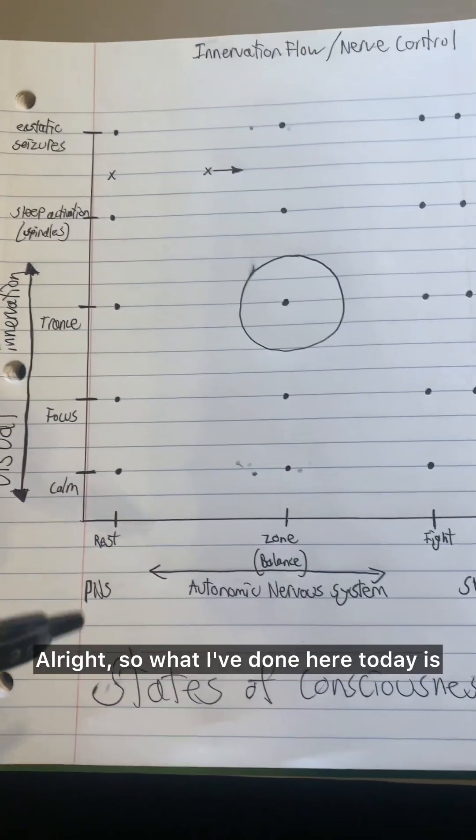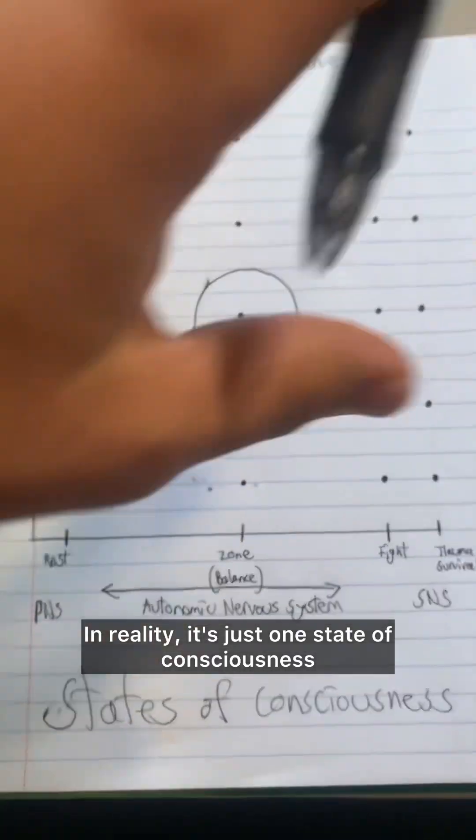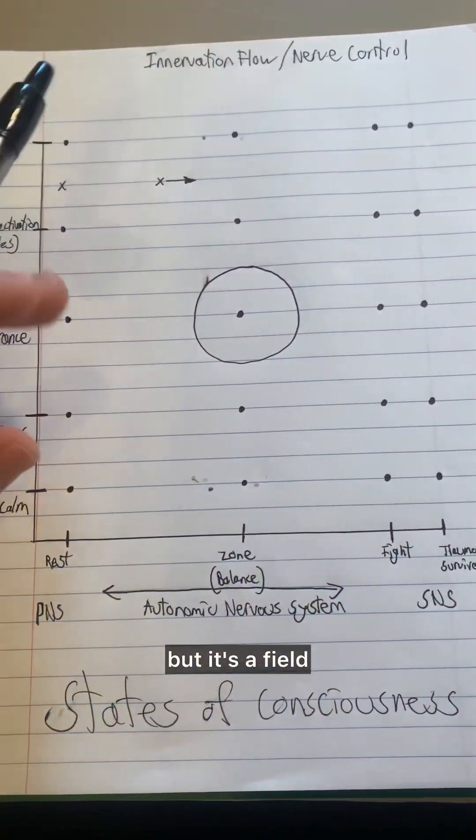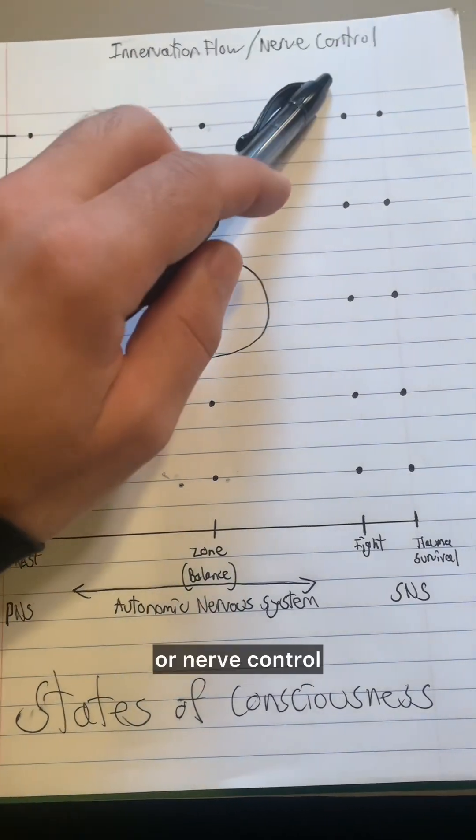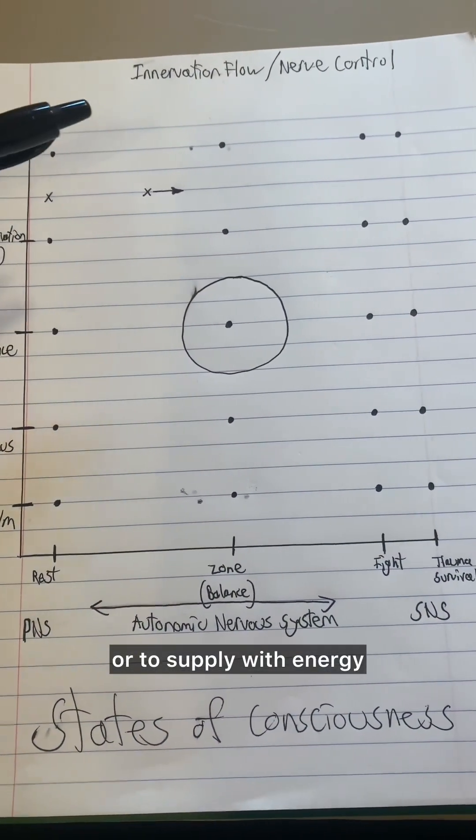Alright, so what I've done here today is map out the states of consciousness. In reality, it's just one state of consciousness, but it's a field. We also think of it as innervation flow or nerve control. Innervation is to supply with nerves or to supply with energy.